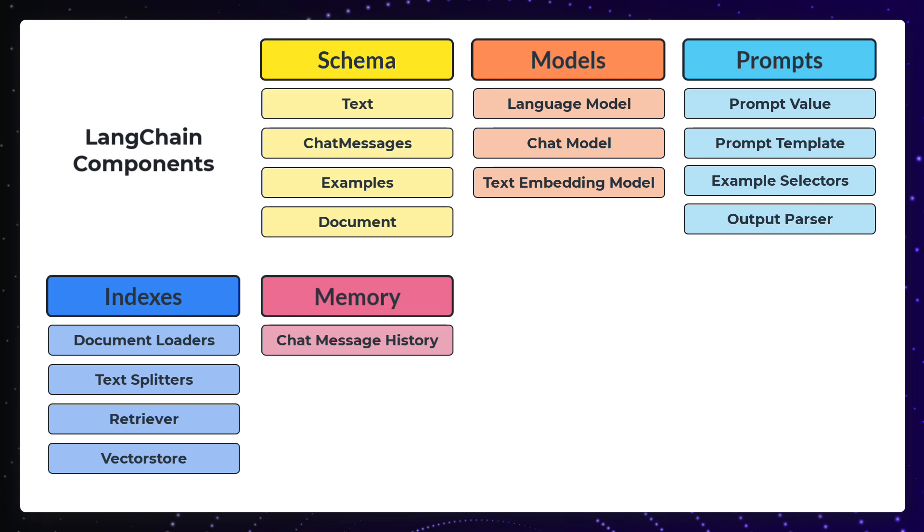Memory is straightforward. There are two types of memory, short-term and long-term. Short-term memory remembers the history of our chat messages in a single conversation, while long-term memory is between multiple conversations.